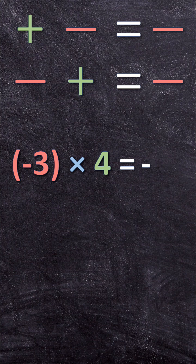So let's look at two examples. A negative 3 times a positive 4. So your answer is going to be negative. And 3 times 4 is 12.